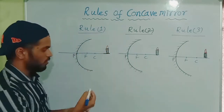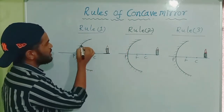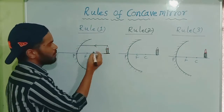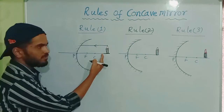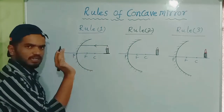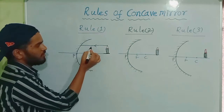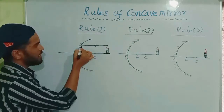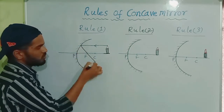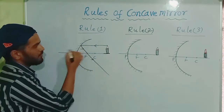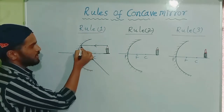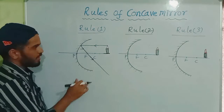Rule 1: We need to take the light ray parallel to the principal axis. This is the principal axis. Any light ray which travels parallel to the principal axis, it reflects and converges through focus. The ray which travels parallel to the principal axis, after reflection, it converges through focus.